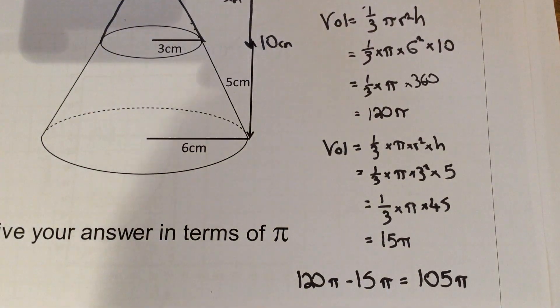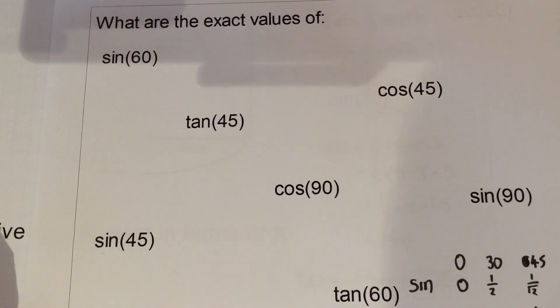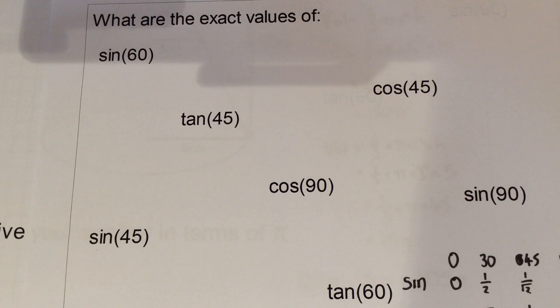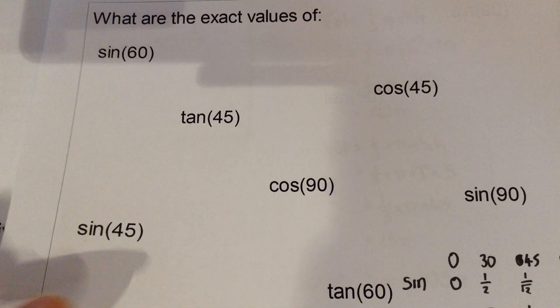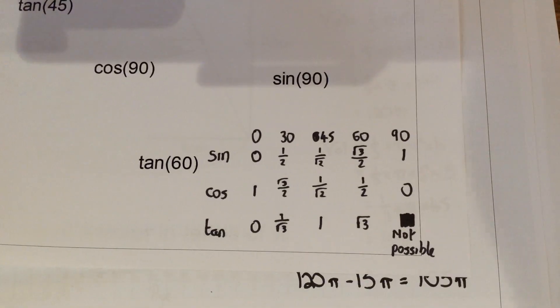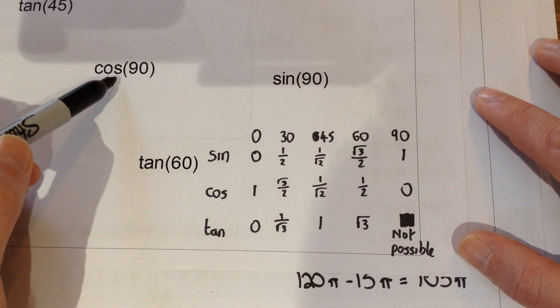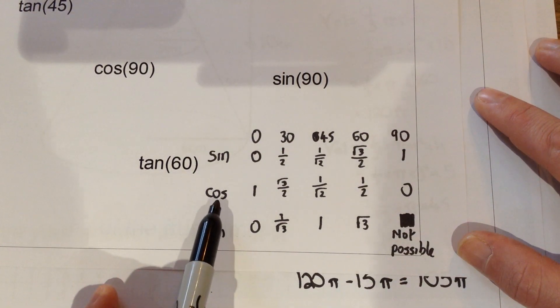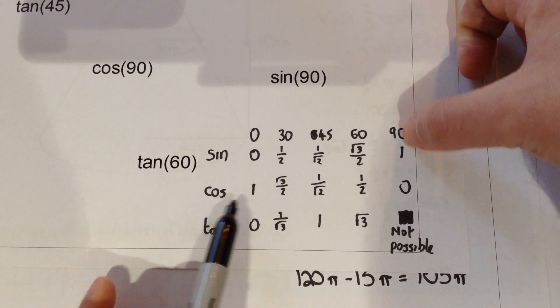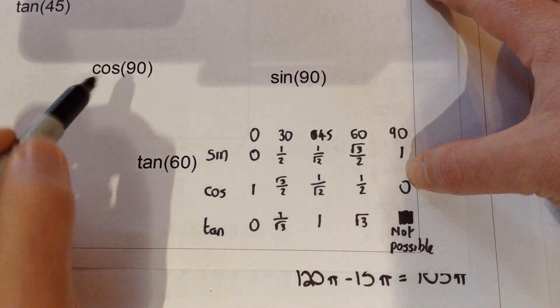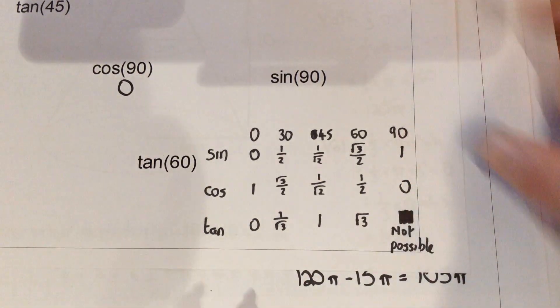The final topic that we're going to look at in this video is all to do with finding exact values of trig. Now the best thing you can probably do in this exam is try and memorize these different values. So here in this little table, for instance, if I wanted to find cos 90, I would look at cos and 90, see where they match up, and it's zero. So for instance, cos 90 is zero. Tan 60, so I go to the tan row, which is here, look for the 60 degrees, and it's root 3.